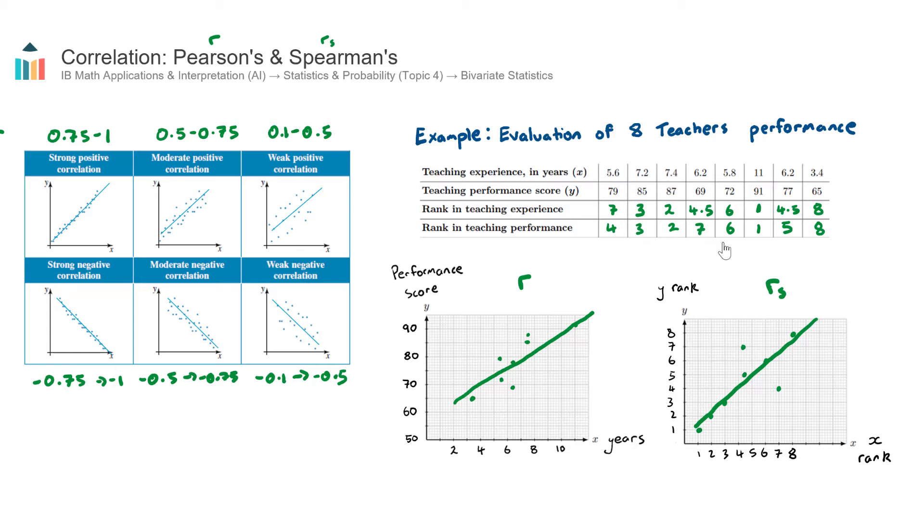Okay, so they are the two types of correlations that you will need to understand in the AI course. We have the R value, which is based off the raw data. And then we have the RS value, which is actually based off the ranks of the data. And then we can describe the correlation using these two descriptors here, either positive or negative for the direction. And then strong, moderate or weak for the strength. Okay, that concludes our video on correlation.